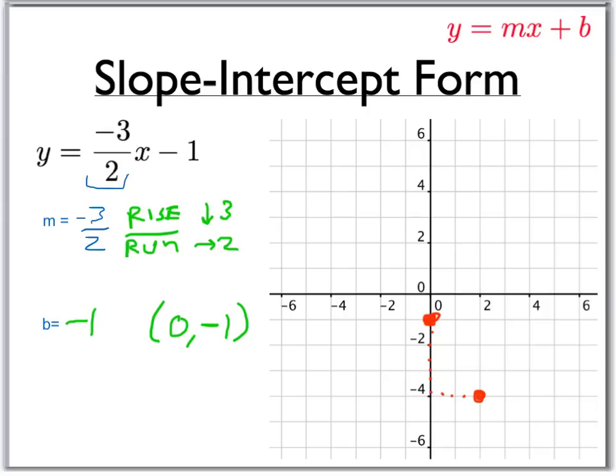And you can continue going in the right direction. You can also go backwards. Instead of going down 3, right 2, you can go left 2, up 3.